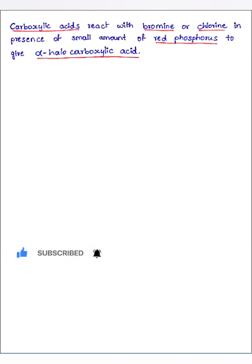So this reaction is called as HVZ reaction, that is Hell-Volhart-Zelinsky halogenation reaction. Now let us see with the reaction. Firstly I am taking acetic acid. This acetic acid on reacting with bromine in the presence of red phosphorus, then the product that we could obtain here is bromoacetic acid.